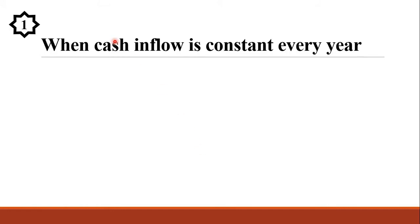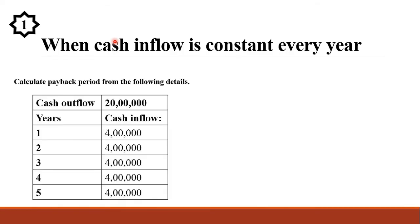Let us see problem number 1: when cash inflow is constant every year. Calculate payback period from the following details. Cash outflow, that is the investment value, is 20 lakhs. Number of years given is 5 years. The cash inflow if you make that investment is 4 lakhs per annum — every year it will generate rupees 4 lakhs. The value of cash inflow is constant every year.